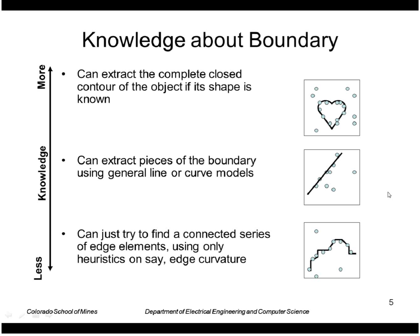If we don't even have that knowledge, we can just try to find a connected series of edge elements like this. So the more knowledge we have, the more we rely on the object shape; otherwise we just form a chain like that.